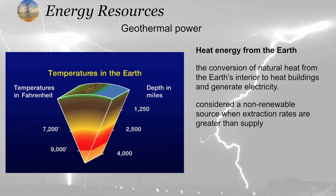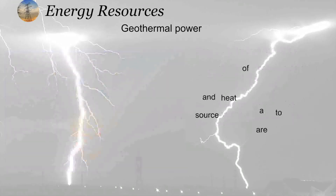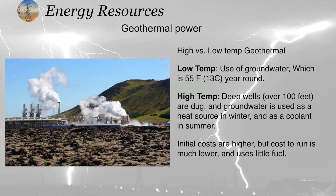Heat from the earth is known as geothermal energy. The conversion of natural heat from the earth's interior to heat buildings and generate electricity happens in a geothermal power plant. It is considered a non-renewable source when extraction rates are greater than supply. There are two types: one is low temperature, using groundwater at around 55 degrees Fahrenheit or 13 degrees Celsius year-round, and the second is high temperature, using deep wells over 100 feet.